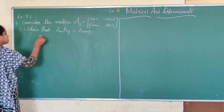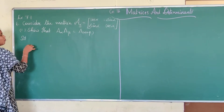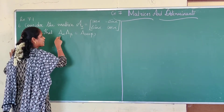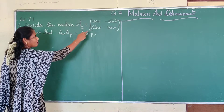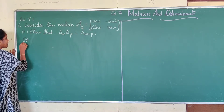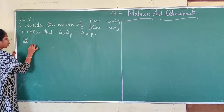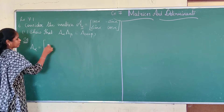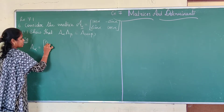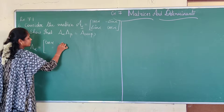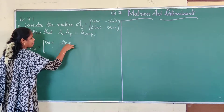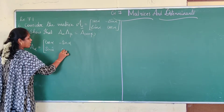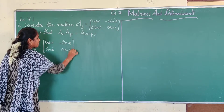For that, first I am going to find the value of A(β), and we have to multiply A(α) and A(β) to find the left-hand side. So first we will write A(α), which is given in the question: cos α, minus sin α; sin α, cos α.